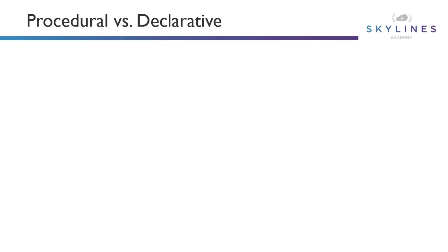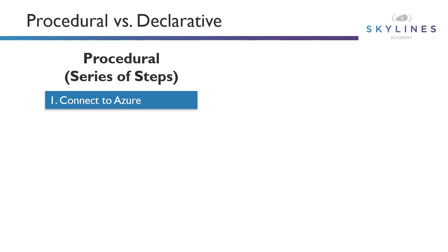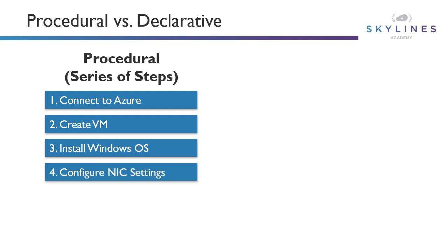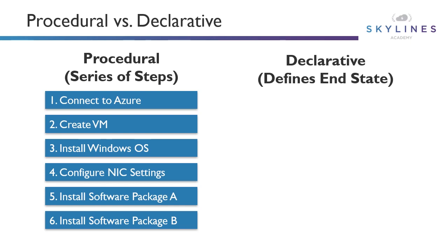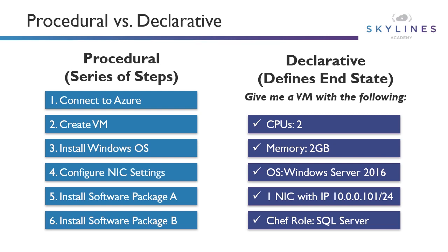Comparing procedural versus declarative: procedural is a series of steps — connect to Azure, create a virtual machine, install Windows OS, configure NIC settings, install software package A, install software package B. Declarative, in contrast, is more like: give me a VM with two CPUs, two gig of memory, this OS, this NIC with an IP, and perhaps a Chef role for installing SQL Server. I'm just declaring the defined end state and saying, you figure out how to get me there, rather than specifying each step.